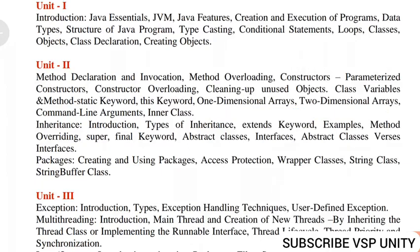In part B, inheritance is the key topic — already present in C++. They will ask: what is inheritance and types of inheritance. There are five different types of inheritance. The question will typically be: define inheritance and explain types of inheritance with examples. They may ask all five types — five diagrams and any one program. You will get good marks if you write like this.